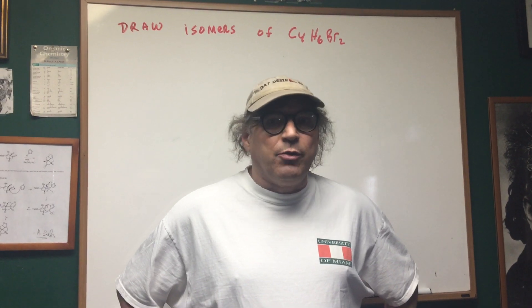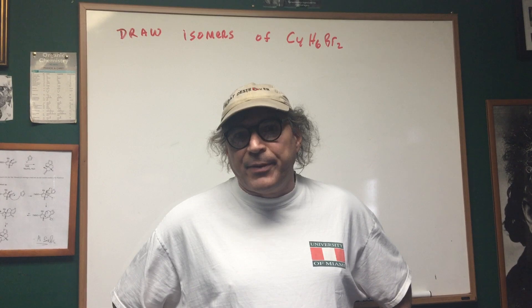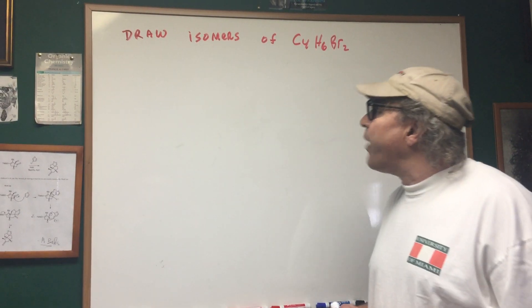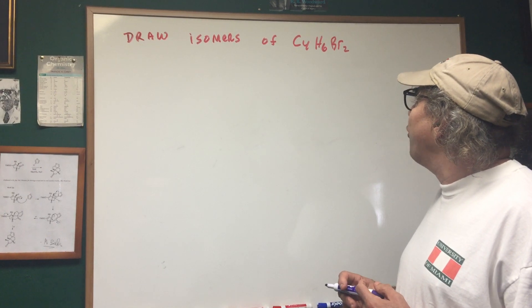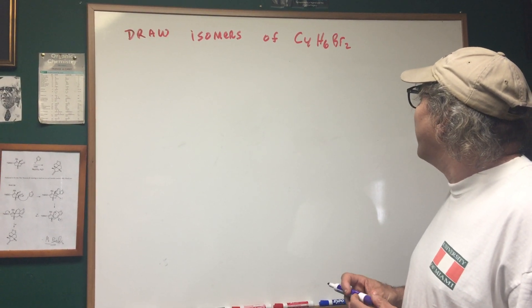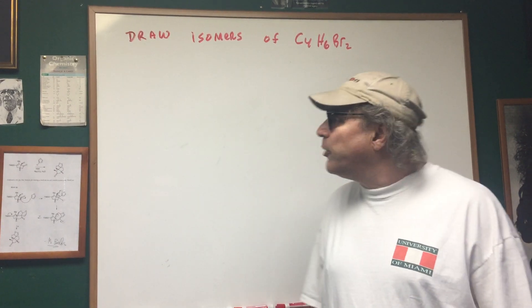So what we want to do is let me show you the technique on how to go about doing it, and for the DAT will be a piece of cake. In this problem I say to you draw isomers of C4H6Br2. I'll draw a few for you just to give you an idea of how we go about doing it.